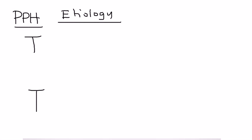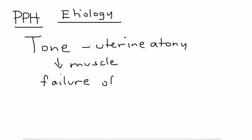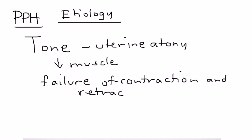The etiology of postpartum hemorrhage can be described as the four T's, where each T represents one cause. The first is uterine atony, which describes a condition in which the strength of the uterine muscle has been lost, causing a failure of contraction and retraction of the uterus.